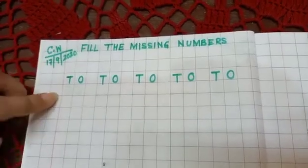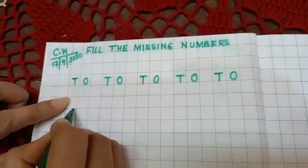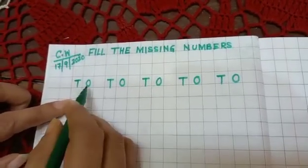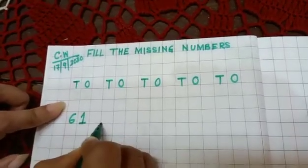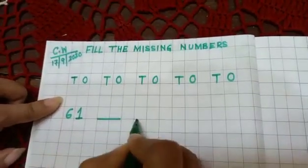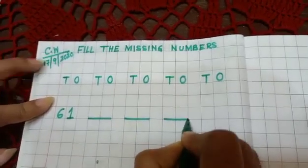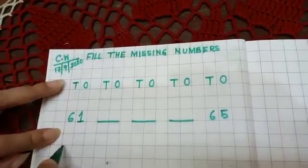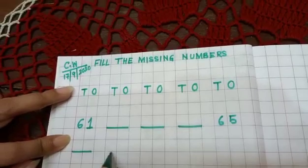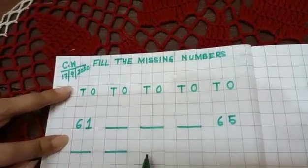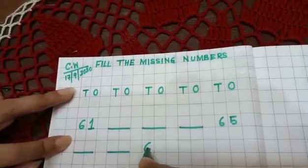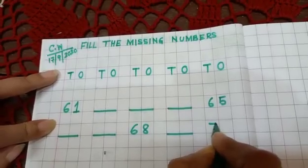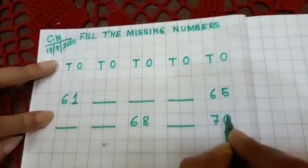Then again you leave here two boxes and write sixty-one. Then give dash, dash, dash — sixty-five. Then give dash, dash. Then write here sixty-eight. Then dash. Then seventy.